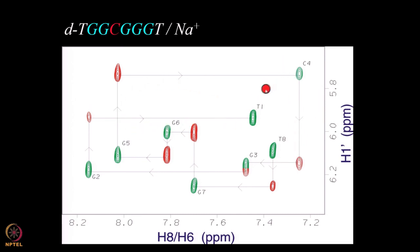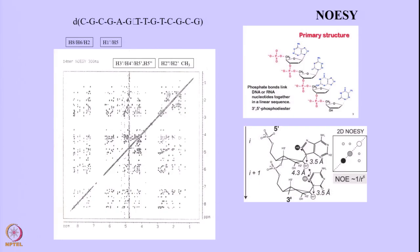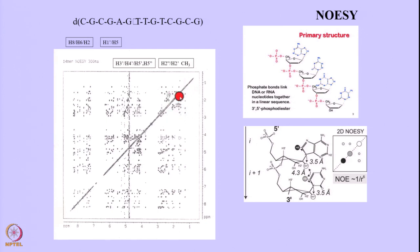Once the H1' protons are identified, you also identify the 1'-2', 2'-2'', and 2'-3' peaks from NOEs in this area. The H1' to 2' and 2'' NOEs are identified, as well as NOEs to 3', 4', and 5' protons. The 1'-2' and 1'-2'' peaks are also seen in the COSY spectrum. Once the 1' are identified, you connect them to the 2' and 2'' as well as 3' and 4' peaks.